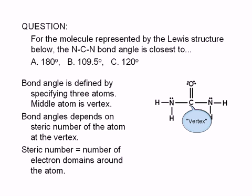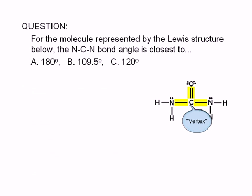Each single bond counts as one electron domain. Here we have two single bonds. A double bond counts as just one domain as well. So the carbon to oxygen double bond also counts as one domain. So the steric number for the carbon atom in the structure shown here is three.